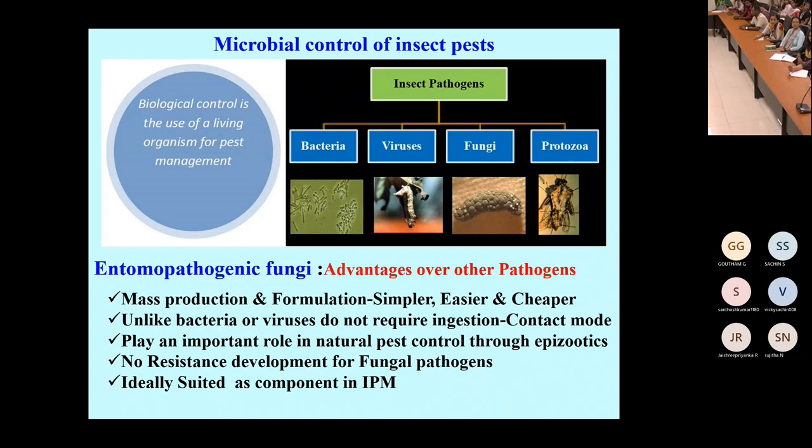There are some advantages of entomopathogenic fungi over other pathogens. The mass production and formulation is simpler, easier, and cheaper. Unlike bacteria and viruses, they do not require injection because this is a contact mode. The spore or conidia will attach to the pest in any mode, penetrate inside, and induce mortality. They play an important role in natural pest control through epizootics.